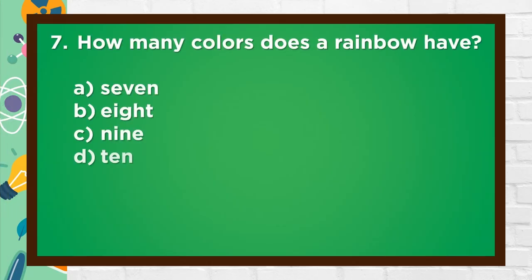Number 7. How many colors does a rainbow have? A. Seven, B. Eight, C. Nine, D. Ten. The answer is A. Seven